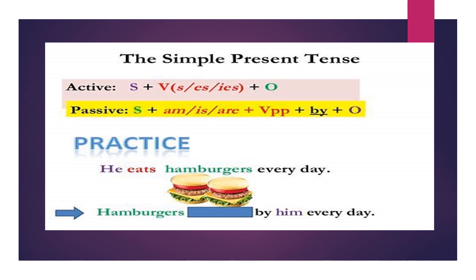So for the simple present tense, when I turn from the active to the passive, I begin with the object — when it comes to the beginning it becomes the subject — then I put am, is, or are, then the verb in the past participle, then 'by,' then the original subject.